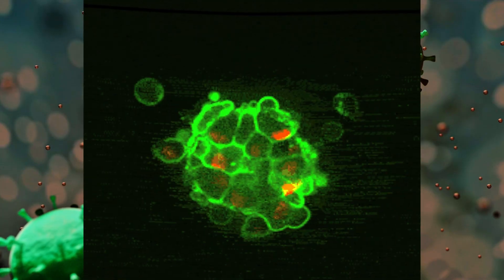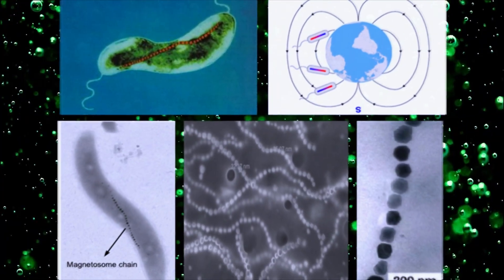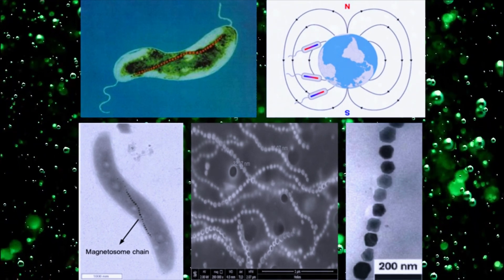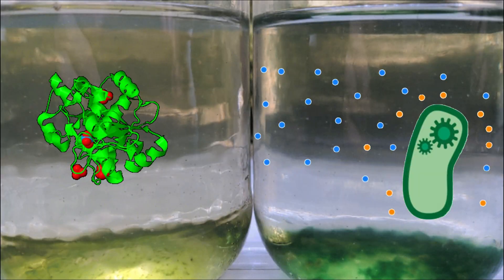This process involves the excitation of electrons to higher energy states, where they can exist in multiple states simultaneously, thus optimizing the energy transfer process for photosynthesis.